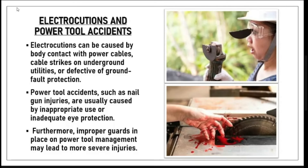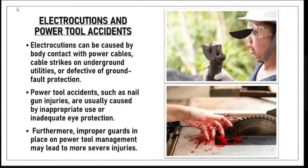Electrocutions and power tool accidents: Electrocution can be caused by body contact with power cables, cable strikes on underground utilities, or defective ground fault protection. Power tool accidents such as nail gun injuries are usually caused by inappropriate use or inadequate eye protection. Furthermore, improper guards placed on power tools may lead to more severe injuries.